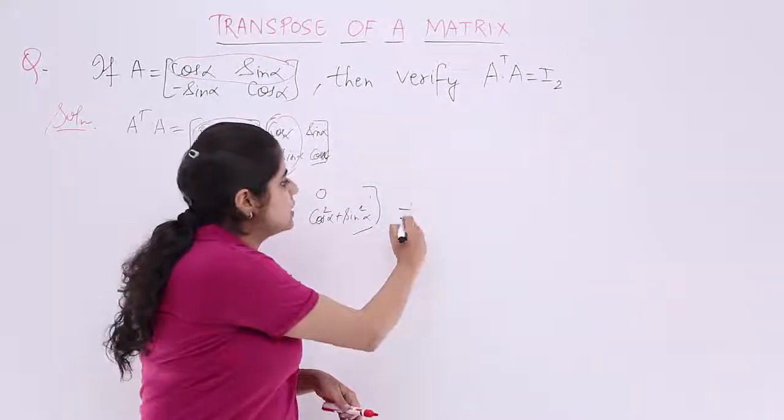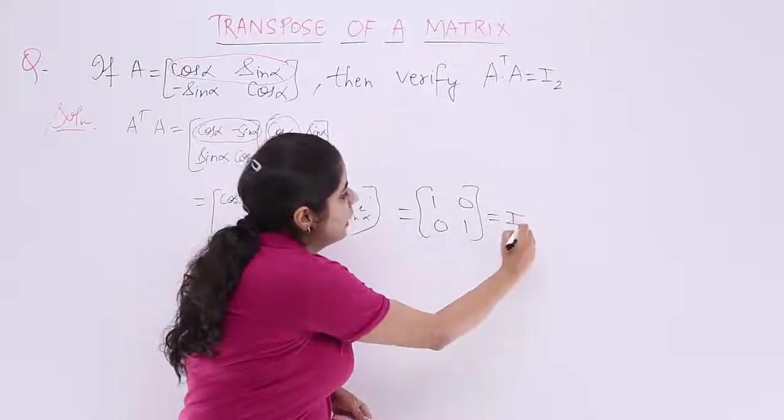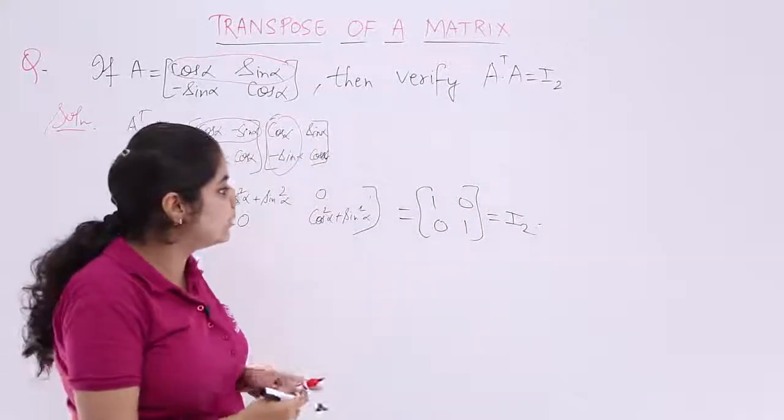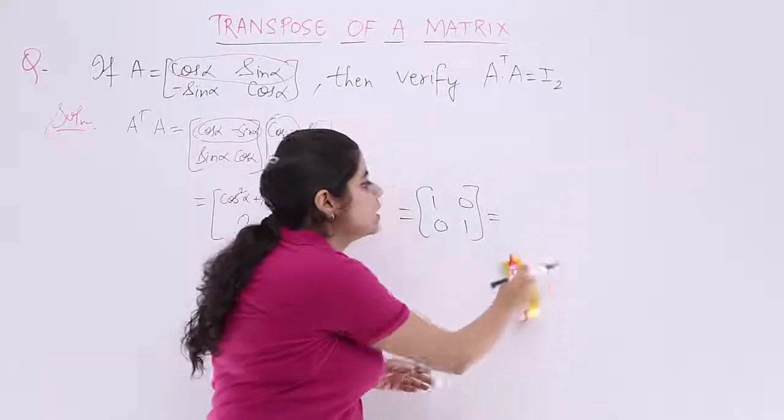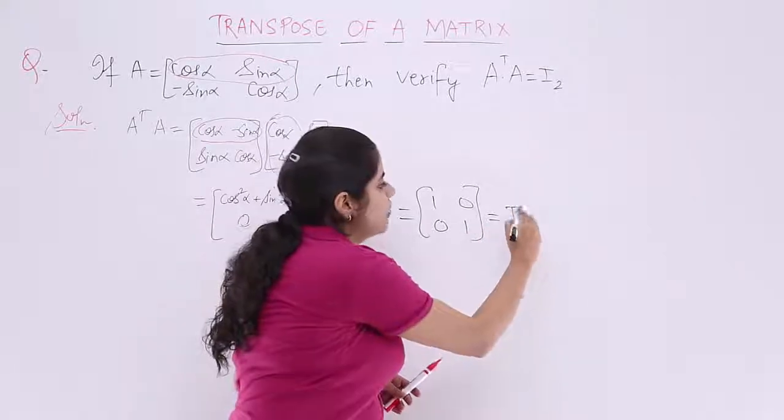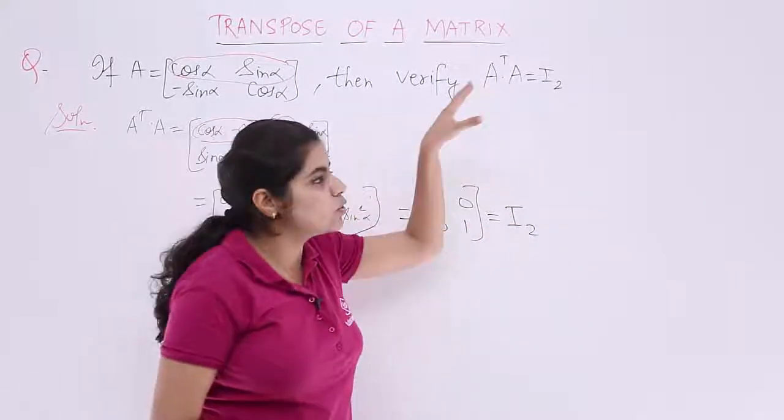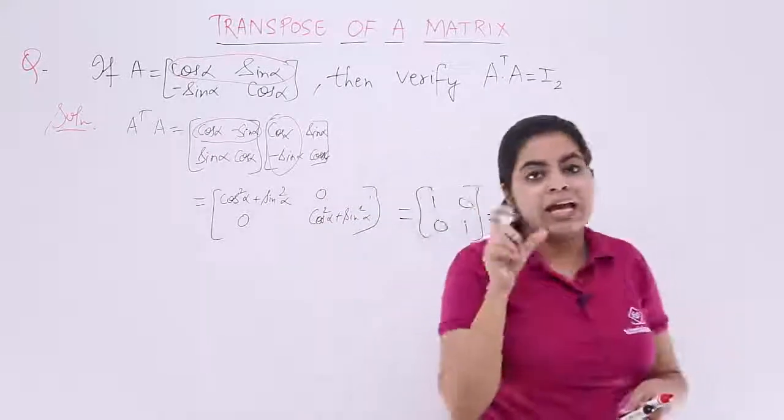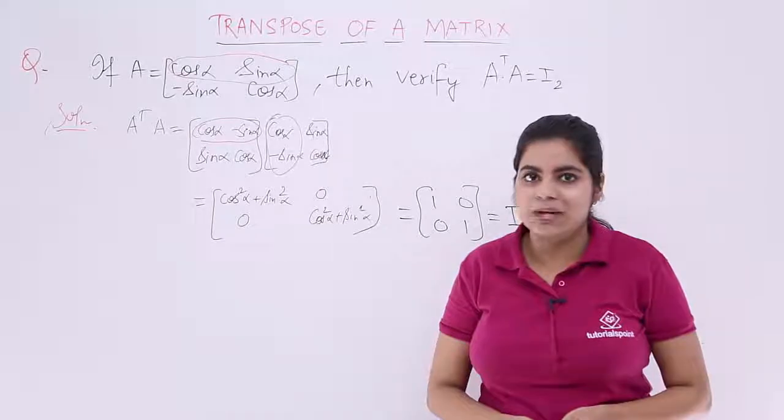And what is this 1, 0, 0, 1? It is nothing but your identity matrix of the order 2 because we know that identity matrix of any order is comprising of 1s and 0s and since it is 2 by 2 matrix. So basically this is identity matrix of the order 2 and we were supposed to prove this only that A transpose into A is equal to I₂ for this matrix.